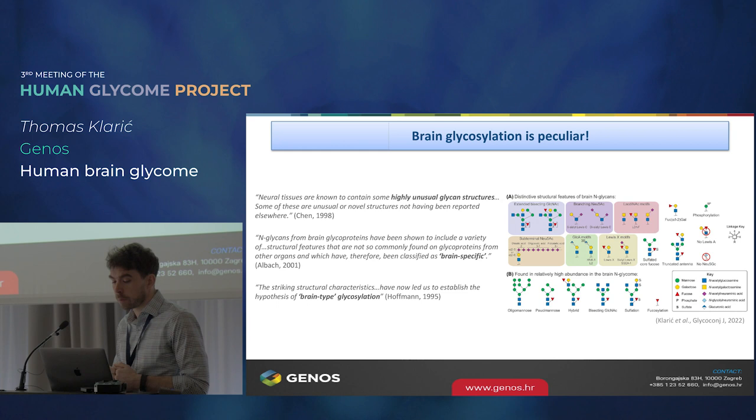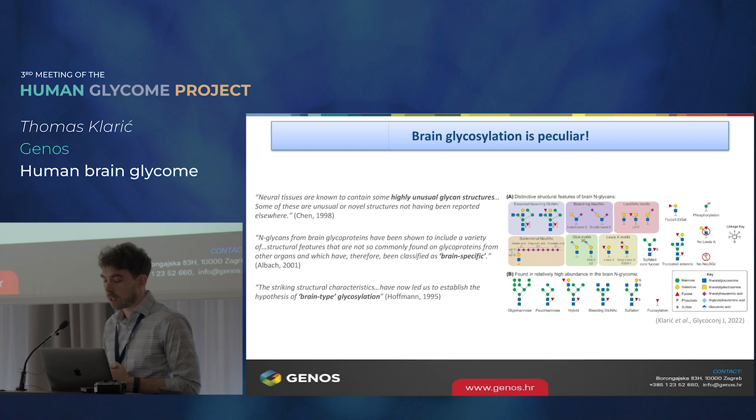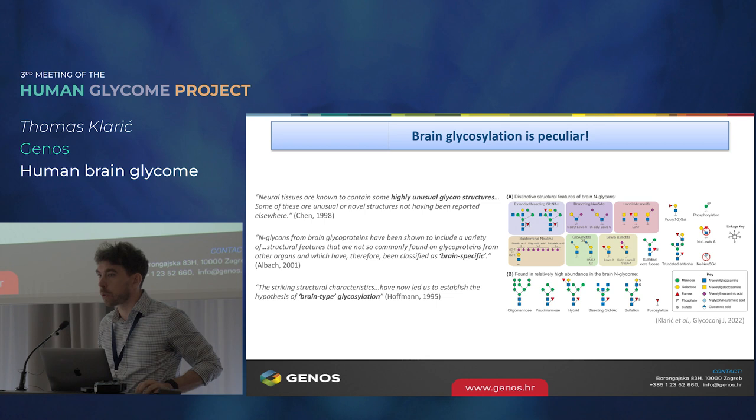One of the things we've learned is that brain N-glycosylation is quite peculiar. The brain has a very characteristic N-glycoprofile, largely due to some very unusual structures which are not present or rarely present in other tissues. Structurally they're very unique, which presents a challenge when trying to structurally annotate the brain N-glycome, because we always have to consider these tricky structures as well.